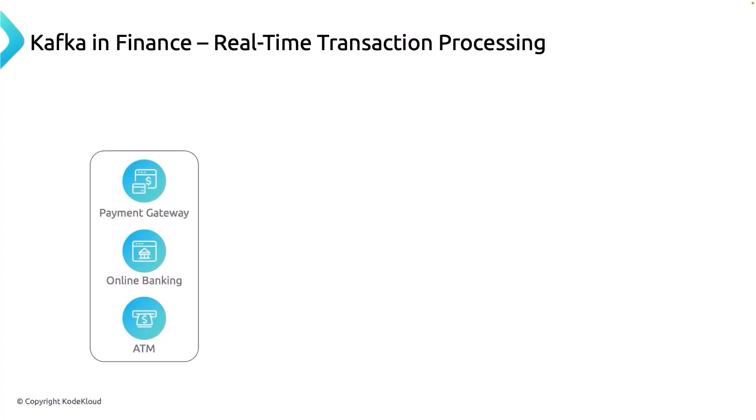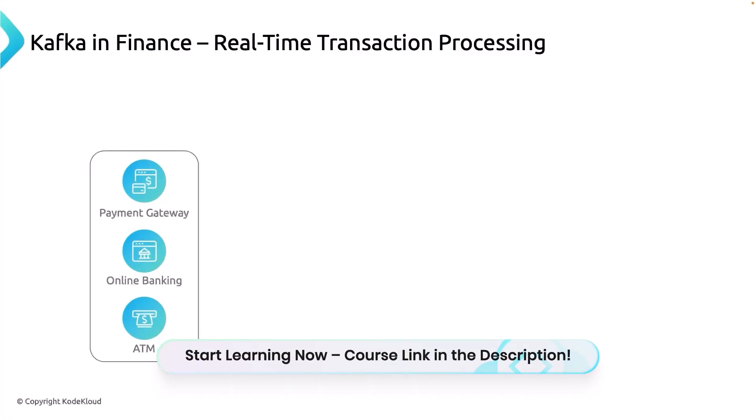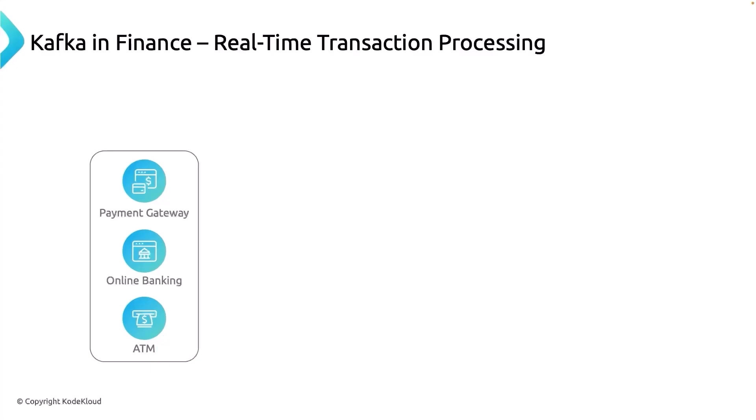We have different kinds of payments or transactions done on a financial service or financial gateway. The first is the payment gateway — credit card transactions, debit card transactions, UPI payments, QR code scans. Then we have online banking transactions, and cash transactions through ATM withdrawals. All of these are some kind of transaction and must be logged in real time.